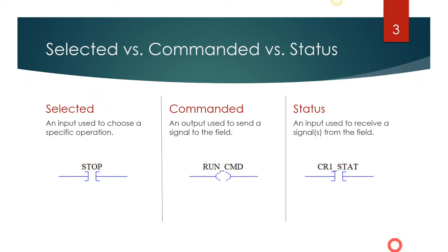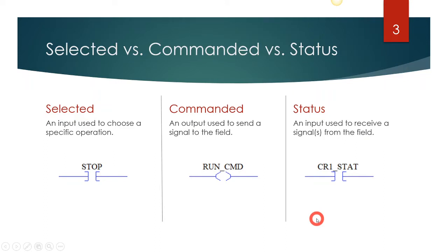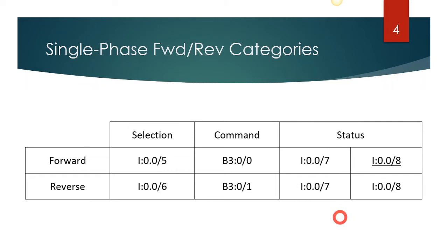So those are the three categories: 'selected' is what the operator is doing — pushing a button or changing a selector switch; 'commanded' is what we're driving as part of our control device; and 'status' is what we're getting back from the field that tells us the state of the component. We're going to need all three of those categories to be able to solve this problem.